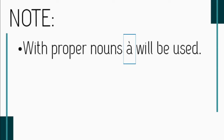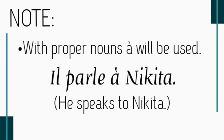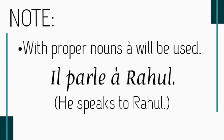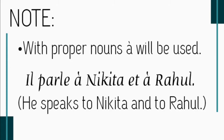We must note that with proper nouns, à alone will be used. Au, à la, à l', and aux will not be used with a proper noun. For example: il parle à Nikita — he speaks to Nikita. Nikita is a proper noun, so we use à and not à la. Il parle à Rahul — he speaks to Rahul. Rahul is masculine singular but it's a proper noun, so we use à, not au. Il parle à Nikita et à Rahul — he speaks to Nikita and to Rahul. Only à will be used with proper nouns.